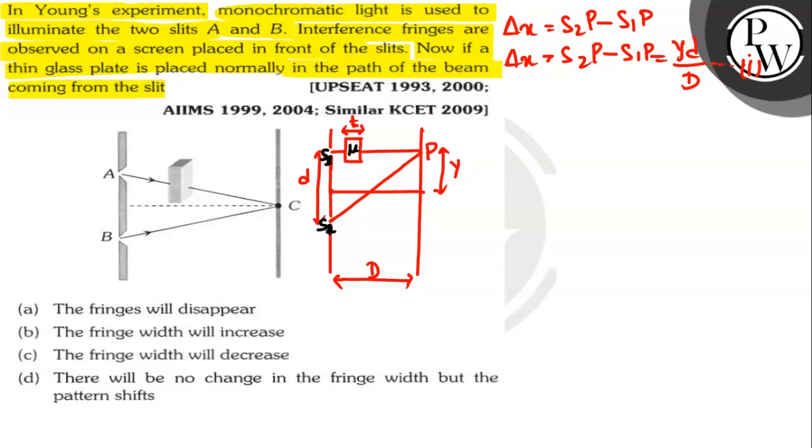Now when the glass plate is placed, then there will be extra path difference due to this glass plate along the path S1P and it will be equal to Del X plate equals mu minus 1 into t.